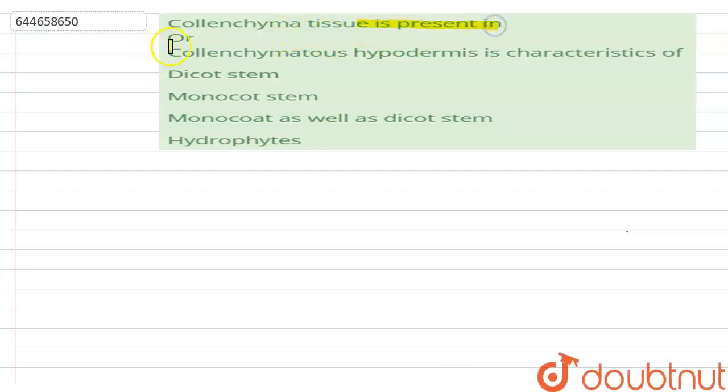Colenchyma tissue is present in, or colenchymatous hypodermis is characteristic of - the options are: dicot stem, monocot stem, monocot as well as dicot stem, hydrophytes.